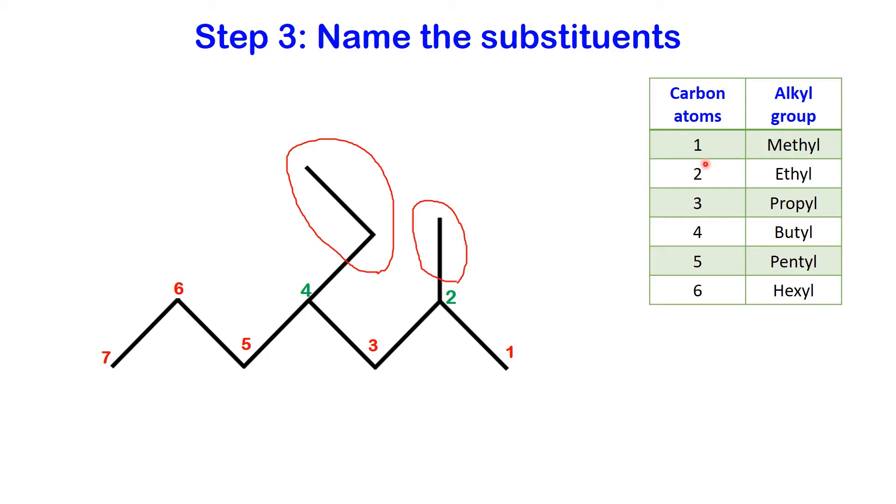Specifically, an alkyl group with one carbon atom is called a methyl group. An alkyl group with two carbon atoms is referred to as an ethyl group. An alkyl group with three carbon atoms is known as a propyl group, and so on. The first substituent is a methyl and the second one is an ethyl.